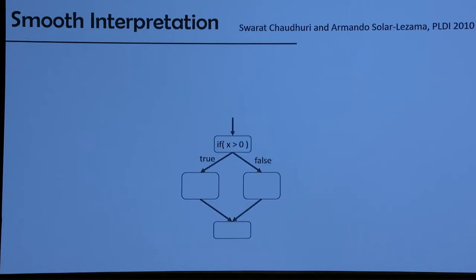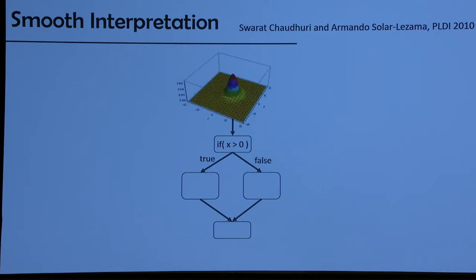We've been thinking about how to bring these two flavors of reasoning together. Several years ago, we had a paper with Swara Chathwari where we looked at what if you actually wanted to use numerical optimization techniques to reason about programs and to find unknown parameters over a program. One thing you could do is symbolically represent the effect of propagating a Gaussian through a program — essentially, convolution with a Gaussian gives you a smoothing operator over the program.